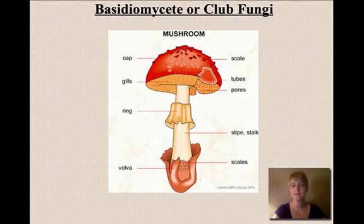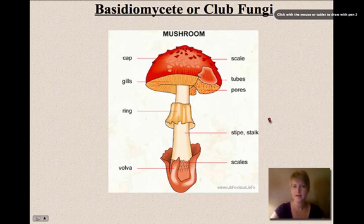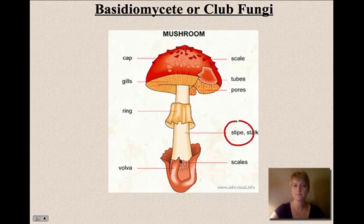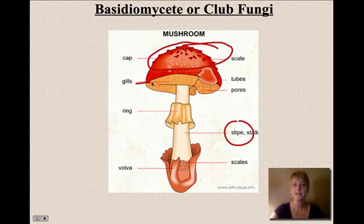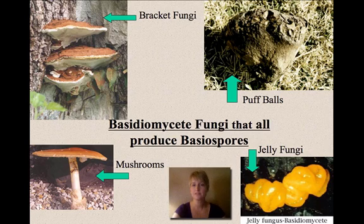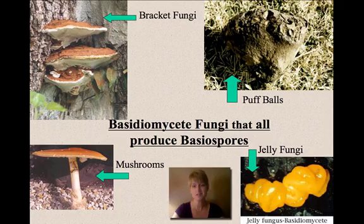The club fungi produce the mushrooms or toadstools we're used to seeing. They have a stipe, which is the stalk of the mushroom, a cap at the very top, and gill structures underneath the cap. There are several types of basidiomycete fungi: bracket fungi that grow on the edges of trees, puff balls, regular mushrooms, and jelly fungi, which actually looks like a blob of jelly.